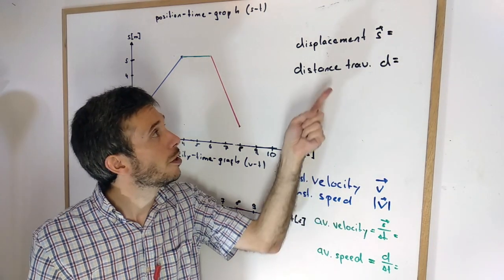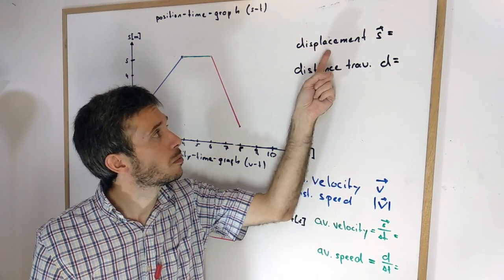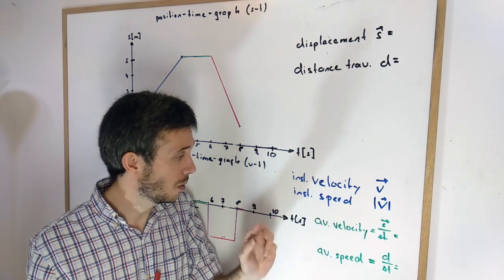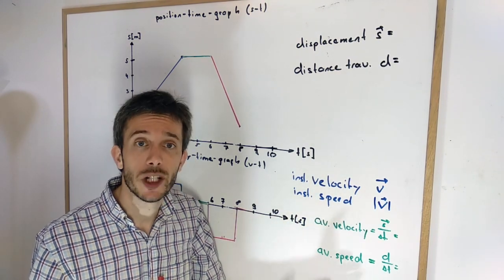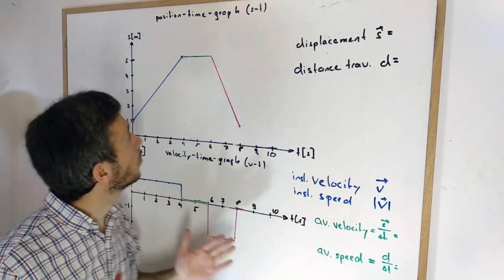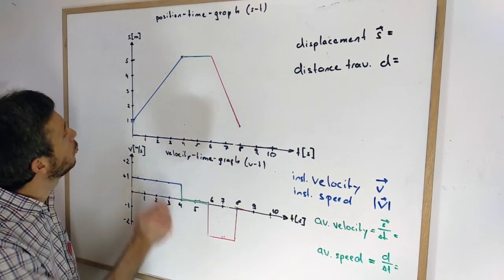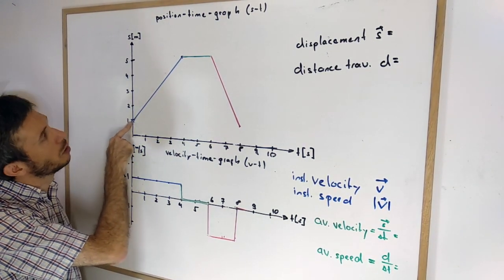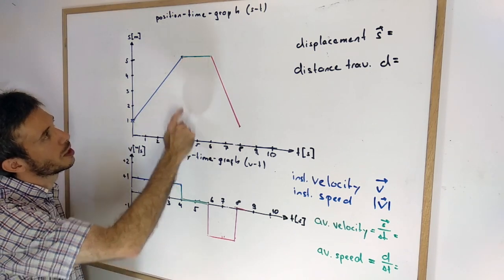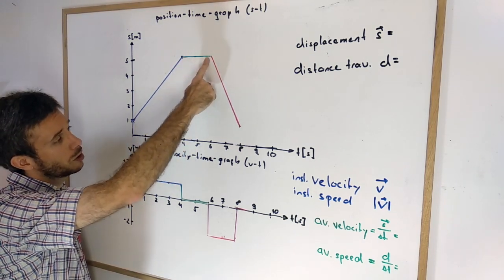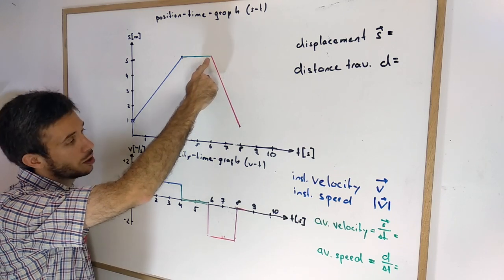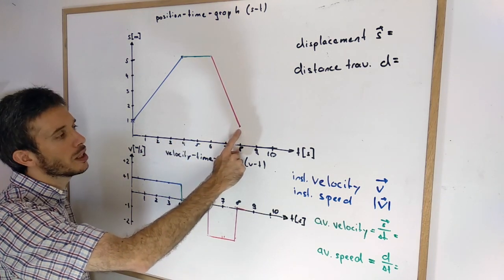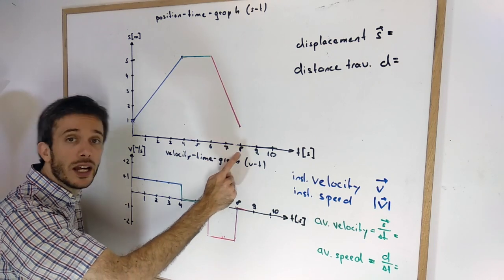Let's look at the definitions of displacement, distance traveled, instantaneous velocity, instantaneous speed, and average velocity and average speed on an example. We have here a graph of a movement where somebody moved from 1 meter to 5 meters within 4 seconds, then stayed there for 2 seconds and traveled back to 1 meter, arriving at 8 seconds.